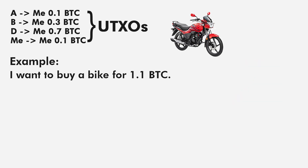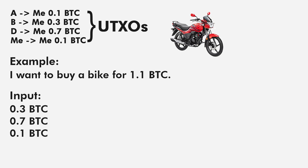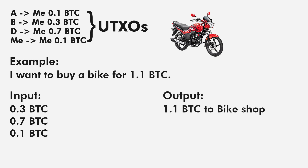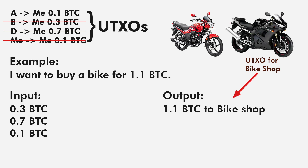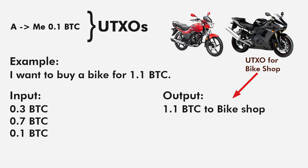Let's see another example. Suppose I want to buy a bike for 1.1 Bitcoin. I need at least 1.1 Bitcoin in input, so I select transactions of 0.3, 0.7, and 0.1 Bitcoin. Then as output, 1.1 Bitcoin will be sent to the bike shop. Since there is no additional amount, we do not need another transaction. So these transactions will be removed from the UTXOs, and for the bike shop it will have a UTXO of 1.1 Bitcoin from me. And so I get the bike.